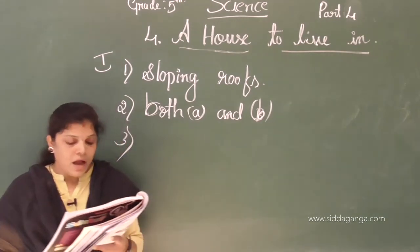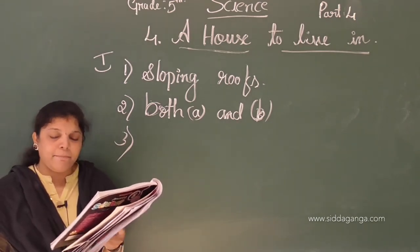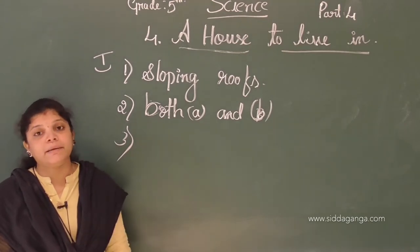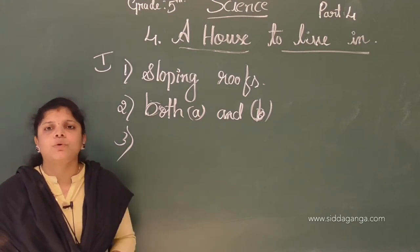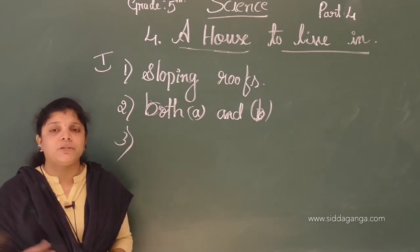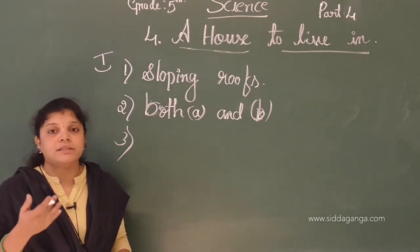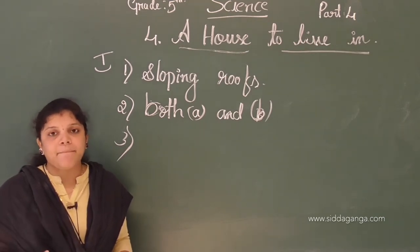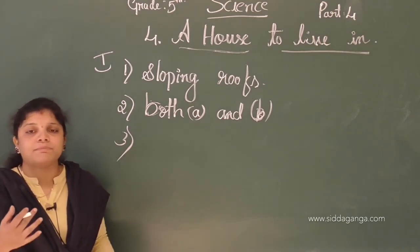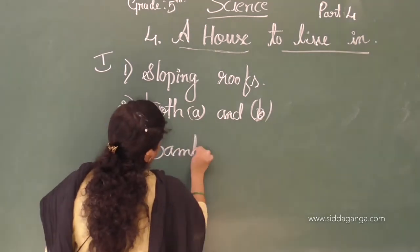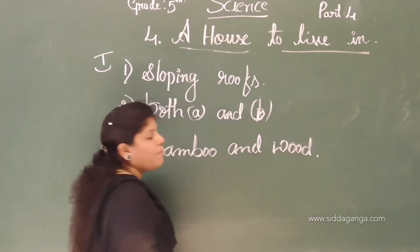Third question: houses in hilly areas are built using — bamboo, wood, or both A and B? Houses in hilly areas are built using bamboo and wood. Normally in hilly areas, earthquakes and landslides occur. These types of houses cause less damage and suffer less from these damages. So the answer is both A and B — bamboo and wood.